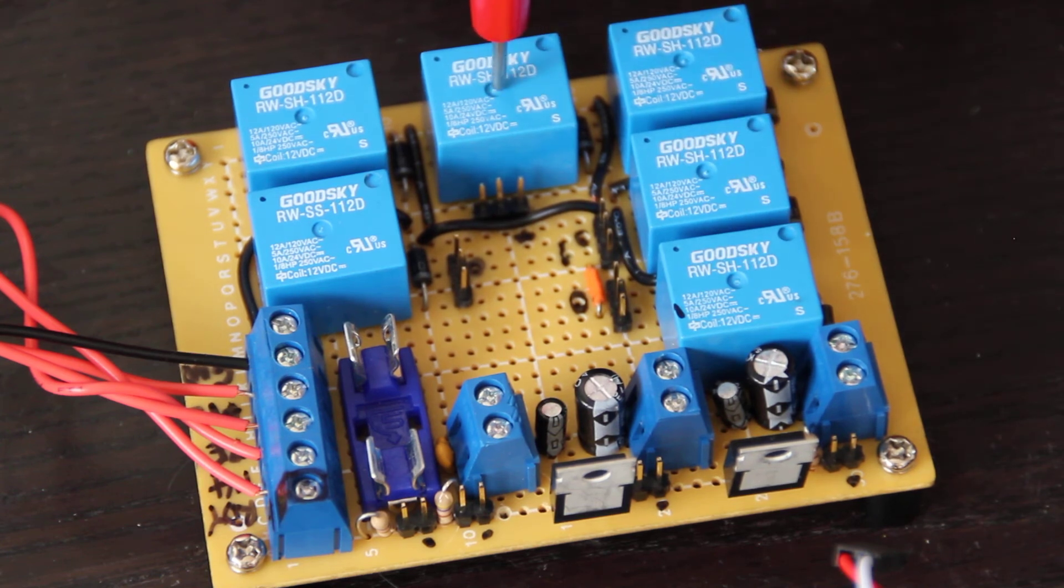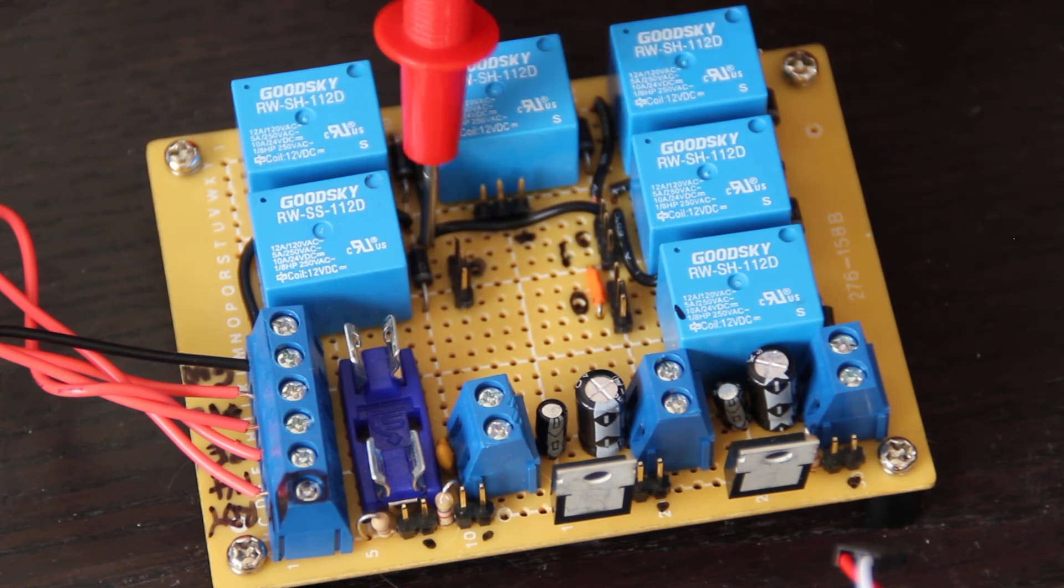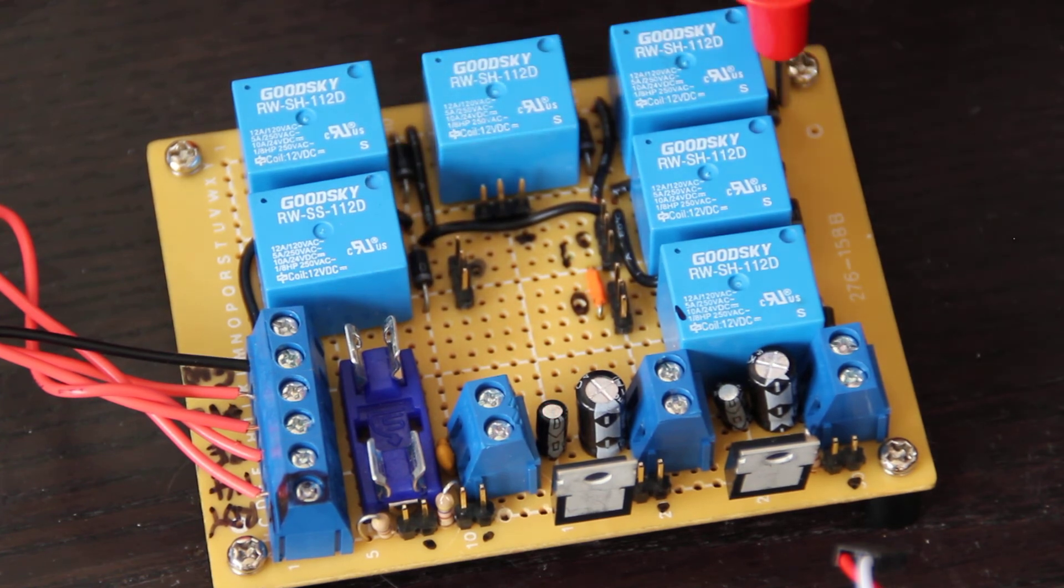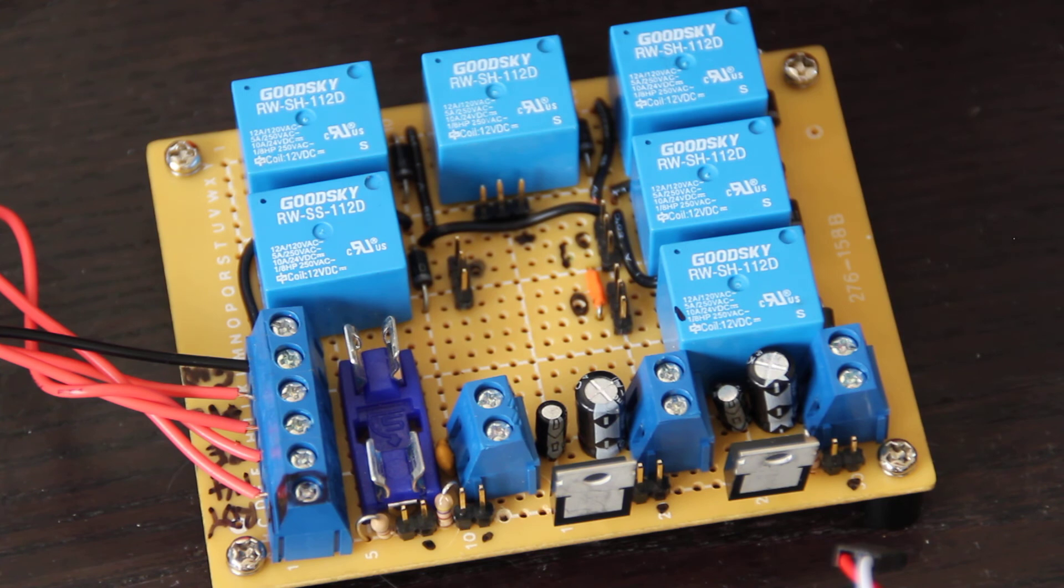All of the relays, except for this guy here, are operating in normally open mode, and then this one is operating in normally closed mode. And each of the relays, you can see there's a little diode next to each one, so each of them has a little diode protecting the output, so that when it switches back and forth, there's no big voltage spike.